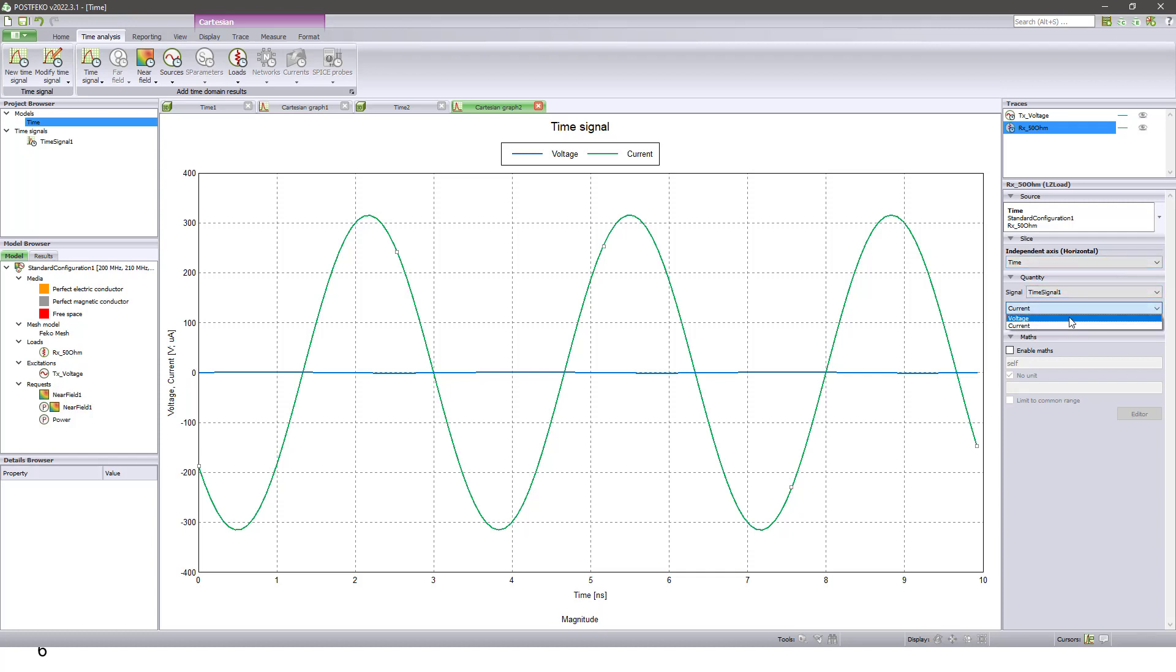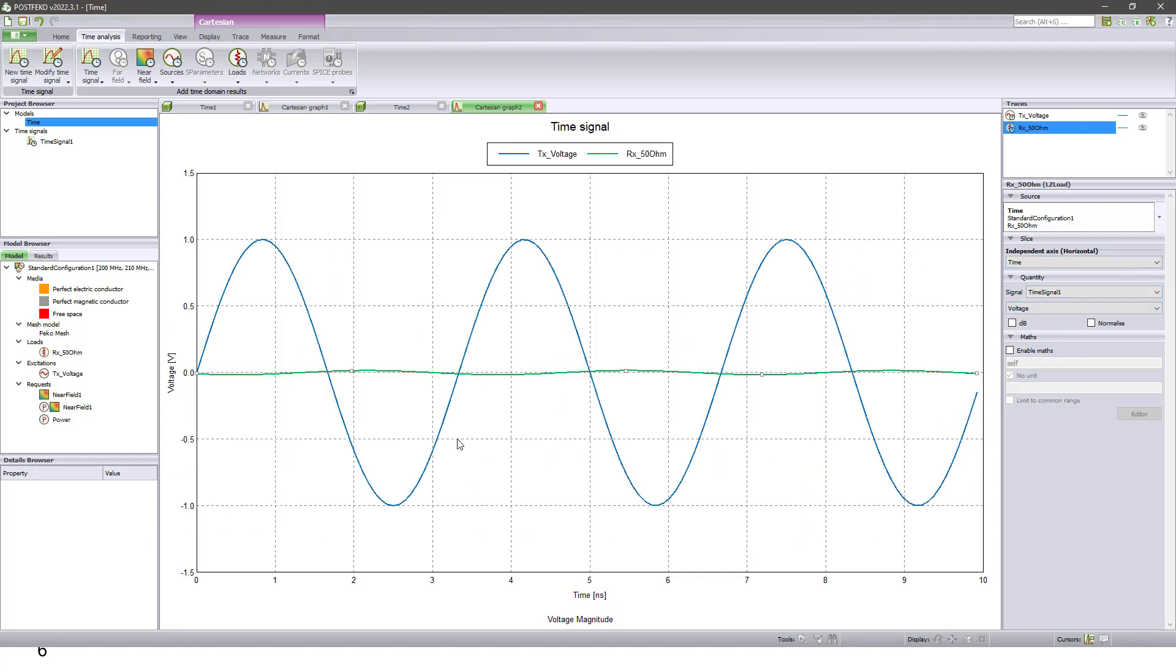And you can also check the output. This should be voltage. Of course, this output has some delay and whose output magnitude is smaller than the TX voltage.